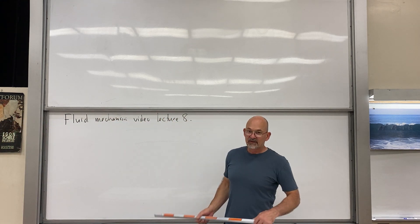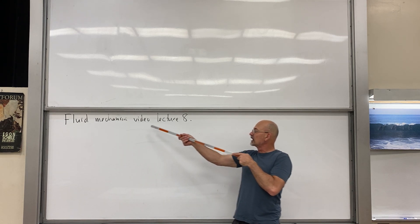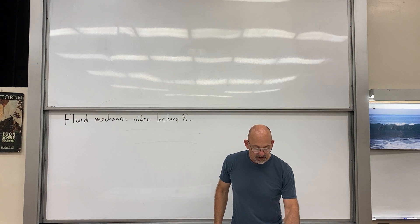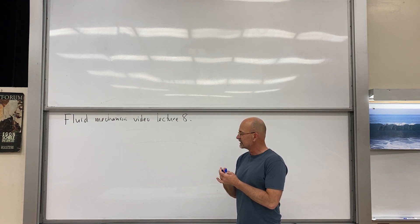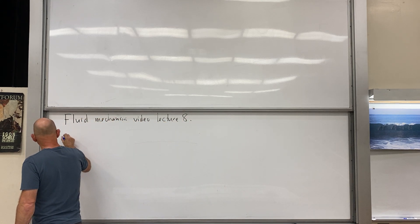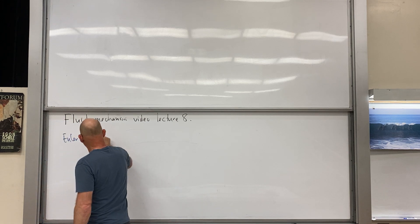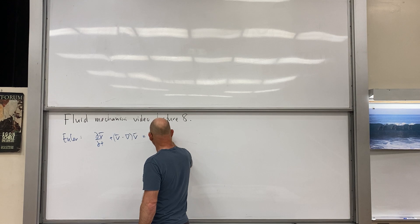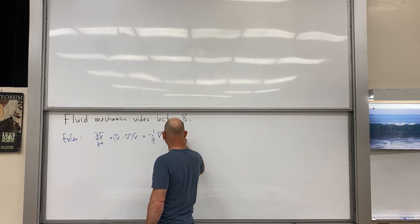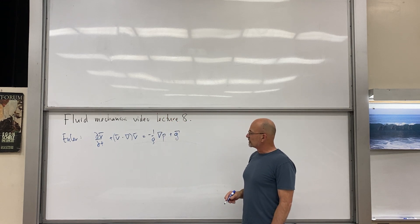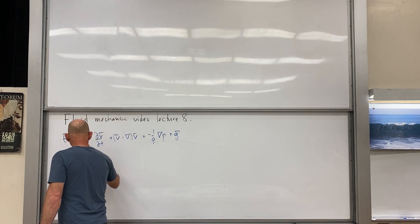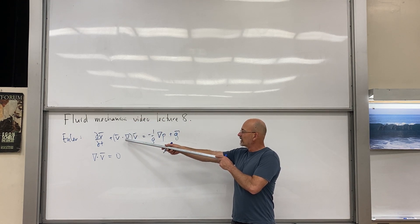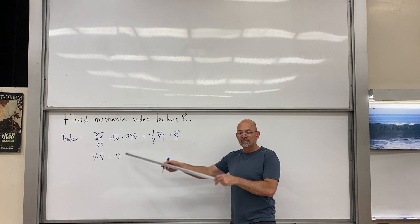Welcome back to the physics video lecture — fluid mechanics lecture 8. We've made our way into potential flows. We start with Euler's equation: grad V = -1/ρ · grad P + g, along with the incompressibility condition divergence of V equals zero. We look at a situation where the nonlinear term can be neglected, which takes us into potential flows.